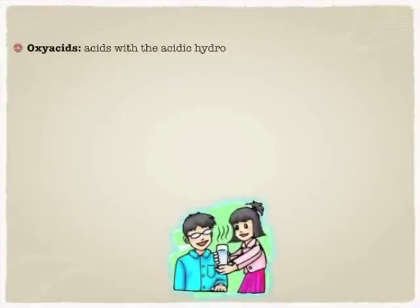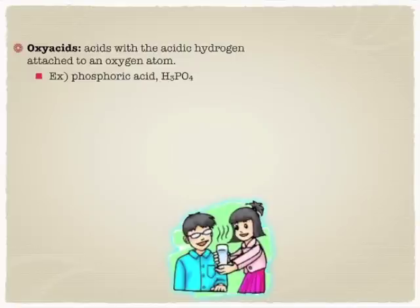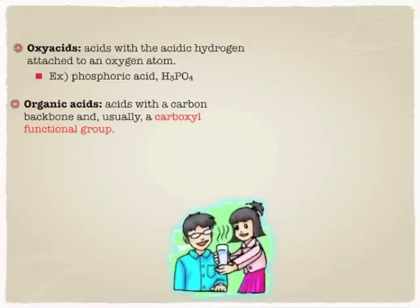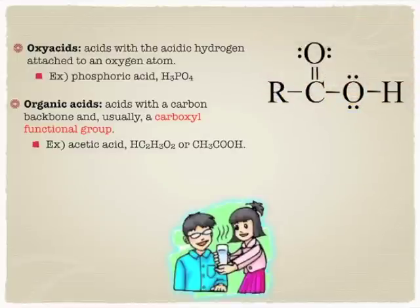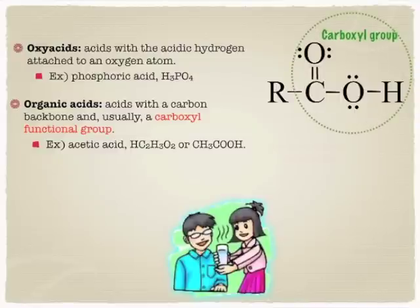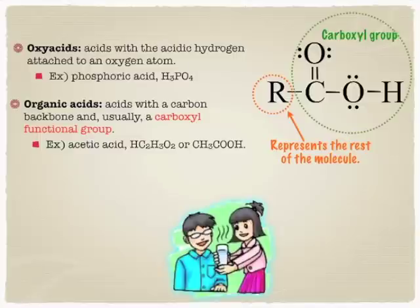A couple other definitions: the idea of an oxyacid — that's anything where the hydrogen is going to come off an oxygen. We saw this before with the idea of polyatomics like phosphate; if it would make phosphoric acid based on the Lewis dot, all those hydrogens are going to be coming off oxygens. And organic acids have a special idea of coming off a carboxyl functional group like acetic acid, where R represents the rest of the molecule and you've got the carboxylic functional group. That carboxyl group is going to dump off its proton, and that's how it becomes an organic acid.